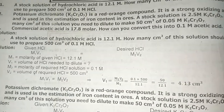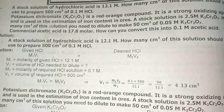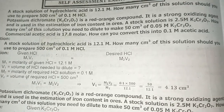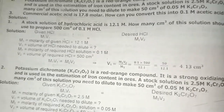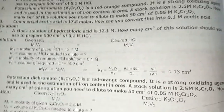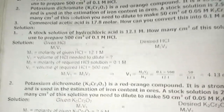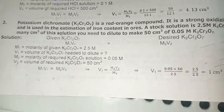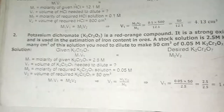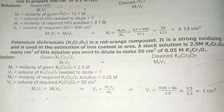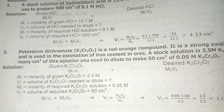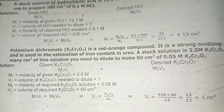Question 1: The stock solution of hydrochloric acid is 12.1 molar. If molarity is given, we find the volume. If the sample and volume are given, we find molarity. You can see the solution here — I have shown the written work on screen.